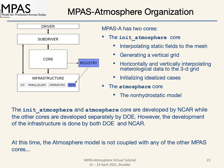There are two cores of MPAS atmosphere: the init_atmosphere core and the atmosphere core. The atmosphere core is a non-hydrostatic model itself. The init_atmosphere core, on the other hand, is responsible for setting up meshes and simulations, including interpolating static fields, generating the vertical grid, and interpolating real or idealized data to the MPAS grid. The init_atmosphere and atmosphere cores are both developed at NCAR, while the other cores are developed by DOE. At this time, the separate cores are not coupled.